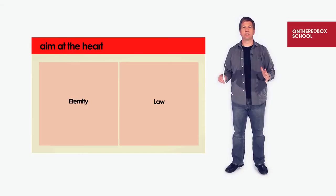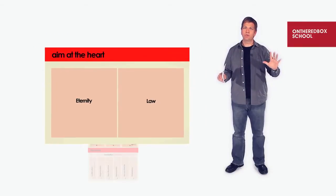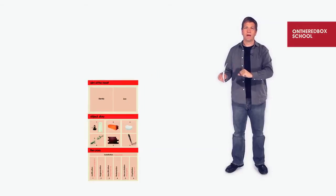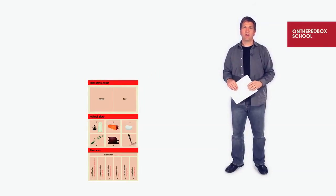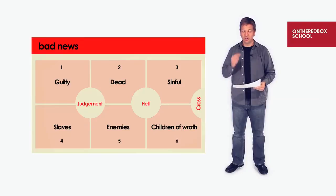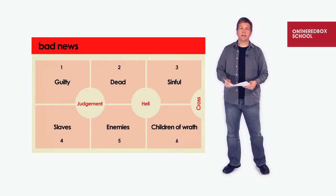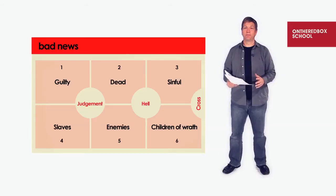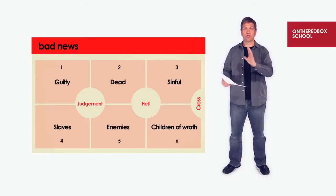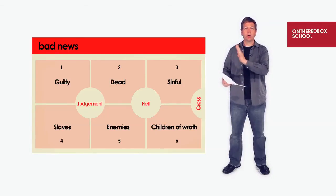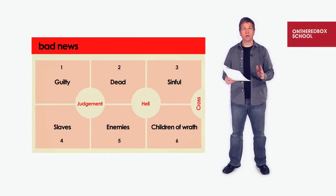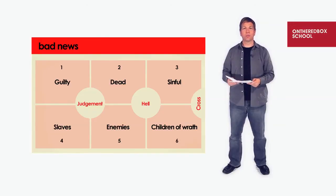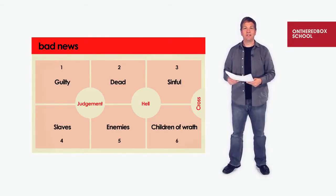When we do an evangelistic message, it's going to be divided up like this: the bad news, the cross, and the good news. Let's start with the bad news. There's lots of bad news when it comes to the condition of mankind. Basically our message structure is bad news, cross, good news. For every good news, there's a corresponding bad news, and the cross is the solution to that. If you look on the cards, you've got them numbered one through six — each doctrine has a number. Justification is one, regeneration is two.